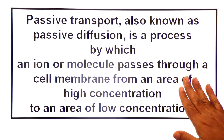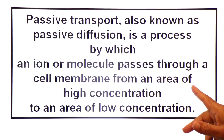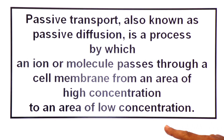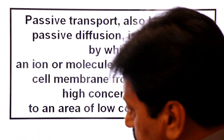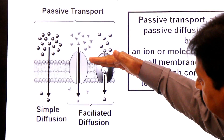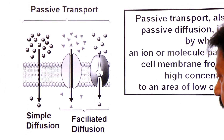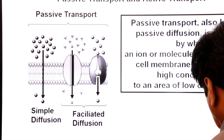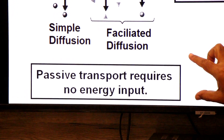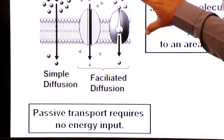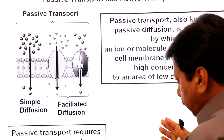Passive transport, also known as passive diffusion, is a process by which an ion or molecule passes through a cell membrane from an area of higher concentration to lower concentration. Passive transport requires no input of energy, because the molecules tend to move from higher concentration to lower concentration.